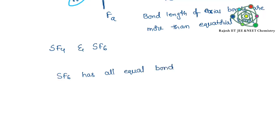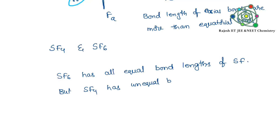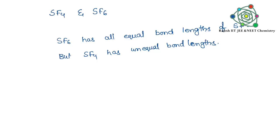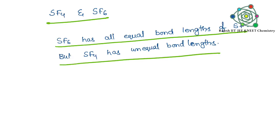We can also take SF4 and SF6. In SF6, all sulfur-fluorine bond angles are 90 degrees. Unlike PCl5 where bond angles and bond lengths differ, in SF6 all bond angles and bond lengths are equal. But in SF4, unequal bond lengths are present.